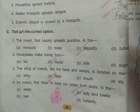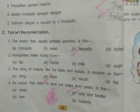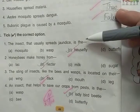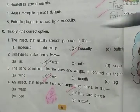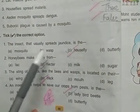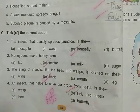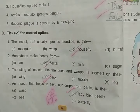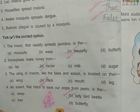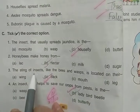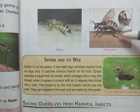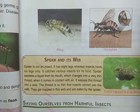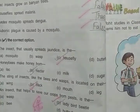The insect that spreads jaundice — from the options mosquito, wasp, house flies, butterfly — jaundice is spread by house flies. Honey bees make honey from nectar, the juice they collect from fresh flowers. The sting of insects like bees and wasps is located at their back — you can see the stings are at the back.